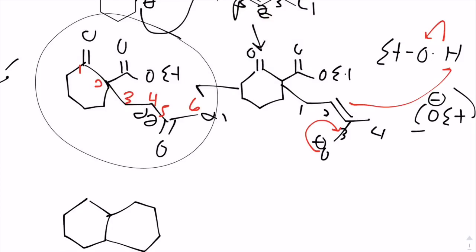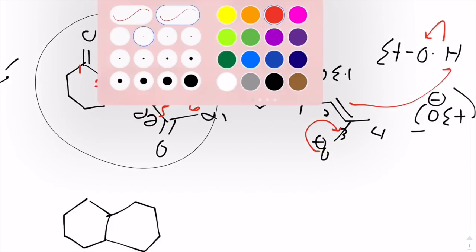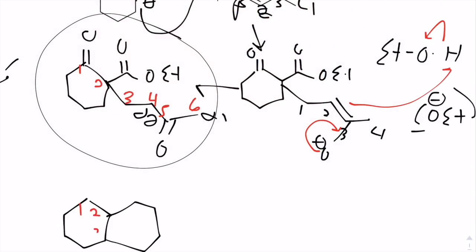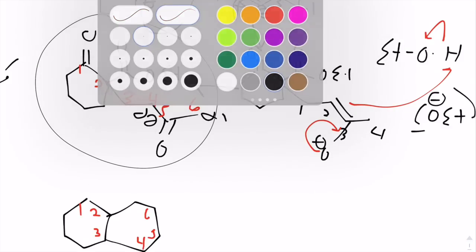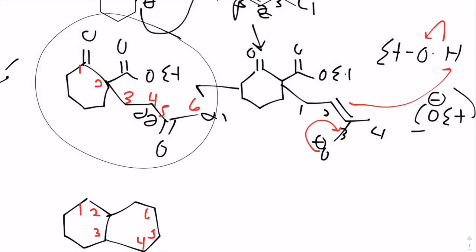Let me just be consistent with my numbering. So it's one, two, three, four, five, six. So at position number six, we have the ketone. At position number two, we have the hydroxyl. And at position three, we have the ester.